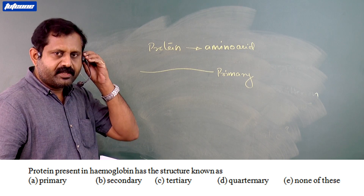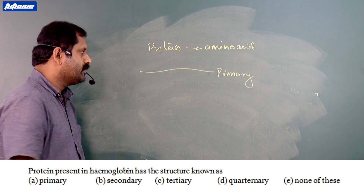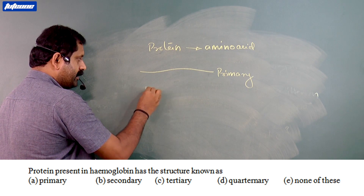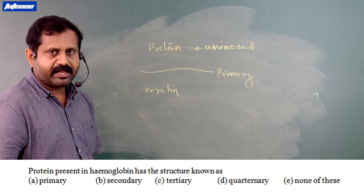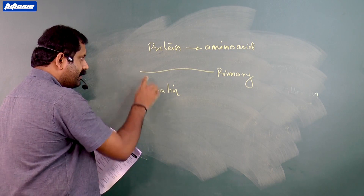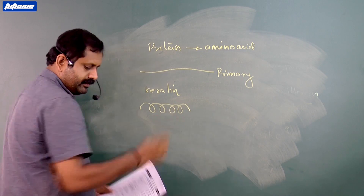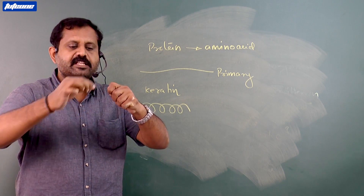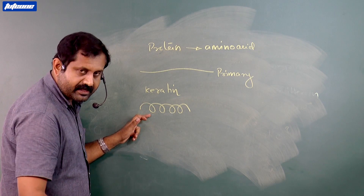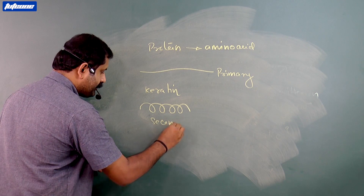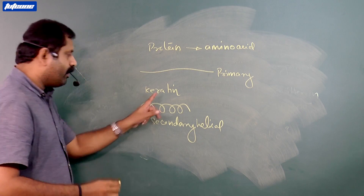In some proteins, this primary structure is converted into other forms. For example, in the case of keratin — a protein found in your hair, nail, etc. — this structure is coiled like a spring. The linear form is coiled like a spring, and this structure is called a helical structure. It is called secondary helical, and it is found in keratin.